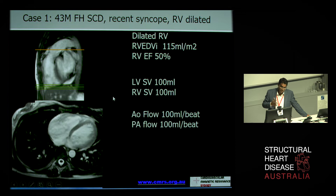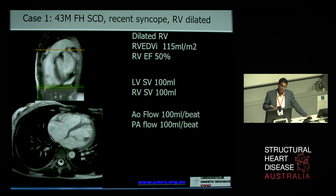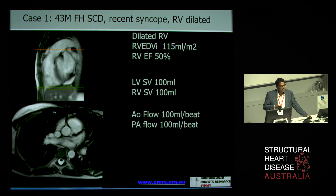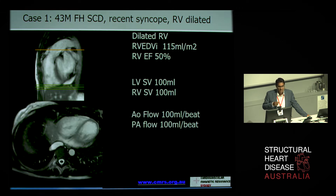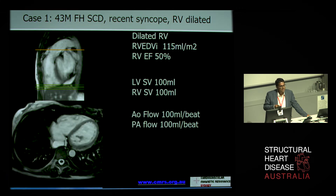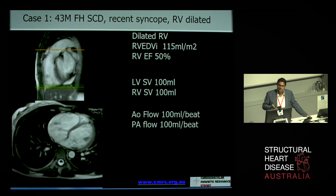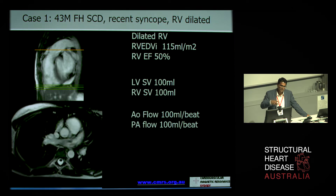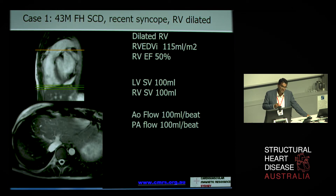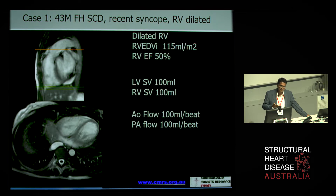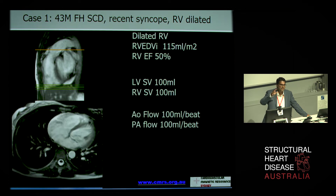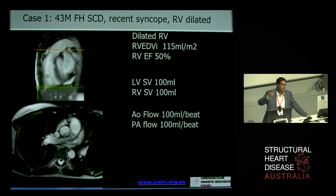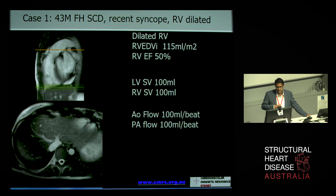Case one — a real case. A 43-year-old guy referred with a family history of sudden cardiac death and a recent syncope. The right ventricle was noted to be dilated on echo, but not very dilated. There was not a lot of detail known about the sudden cardiac death, but because of the dilated right ventricle, what appeared on the form was: could this be a shunt? Could this be ARVC? Could this be some other problem?